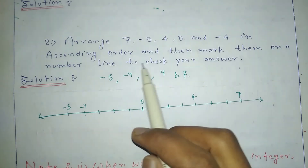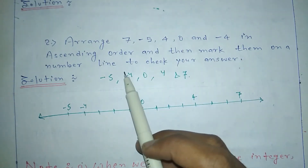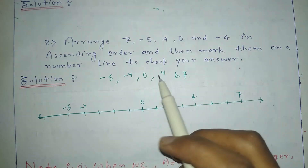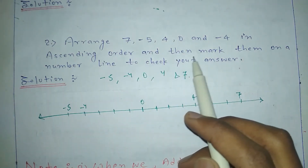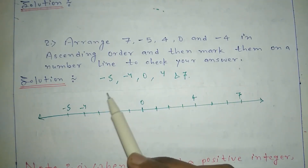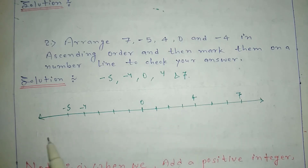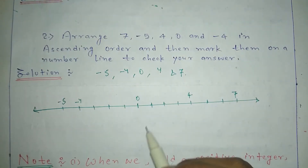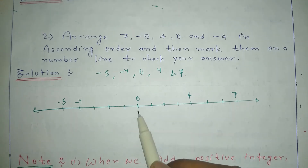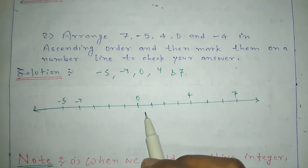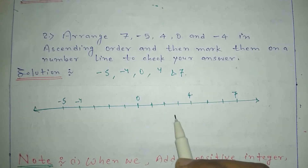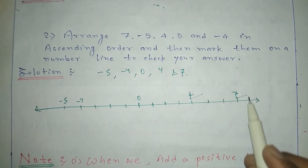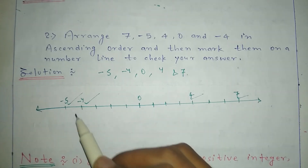The second question: arrange 7, -5, 4, 0, and -4 in ascending order, then mark them on a number line to check your answer. In ascending order these are: -5, -4, 0, 4, and 7. When we represent these numbers on a number line, we take any point as 0, and then place the other numbers accordingly: 4 and 7 to the right, -4 and -5 to the left.